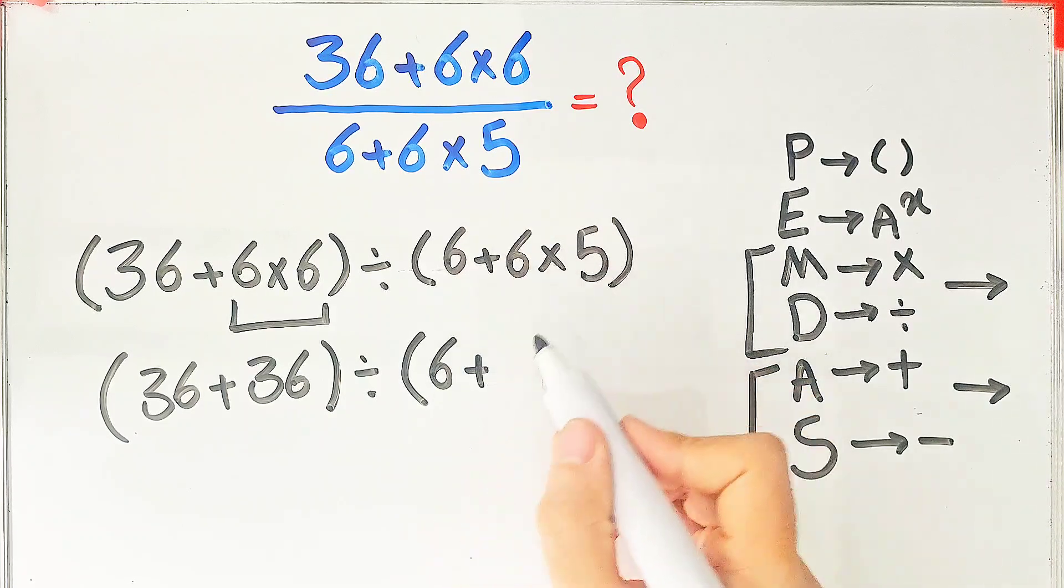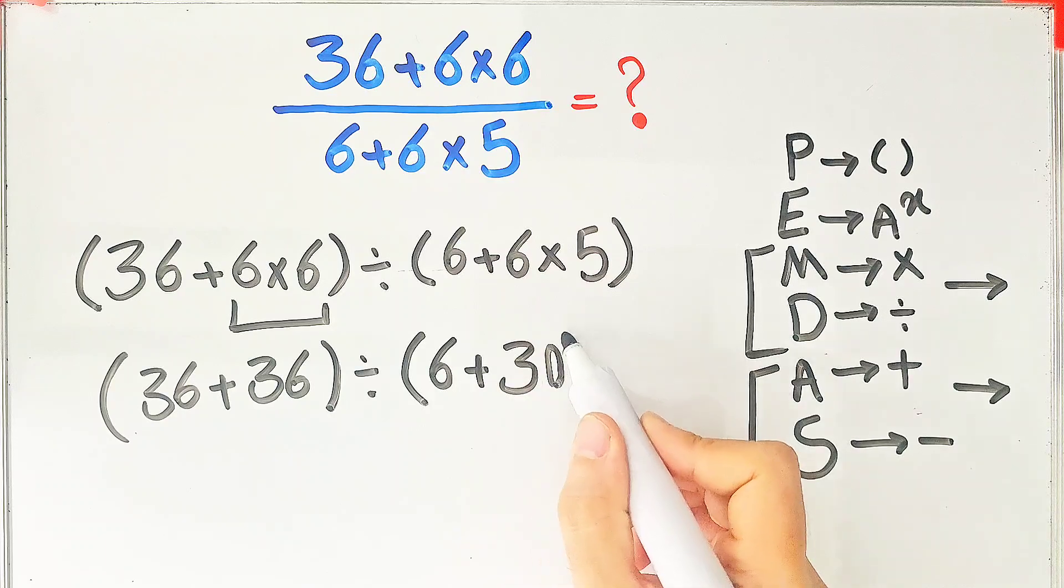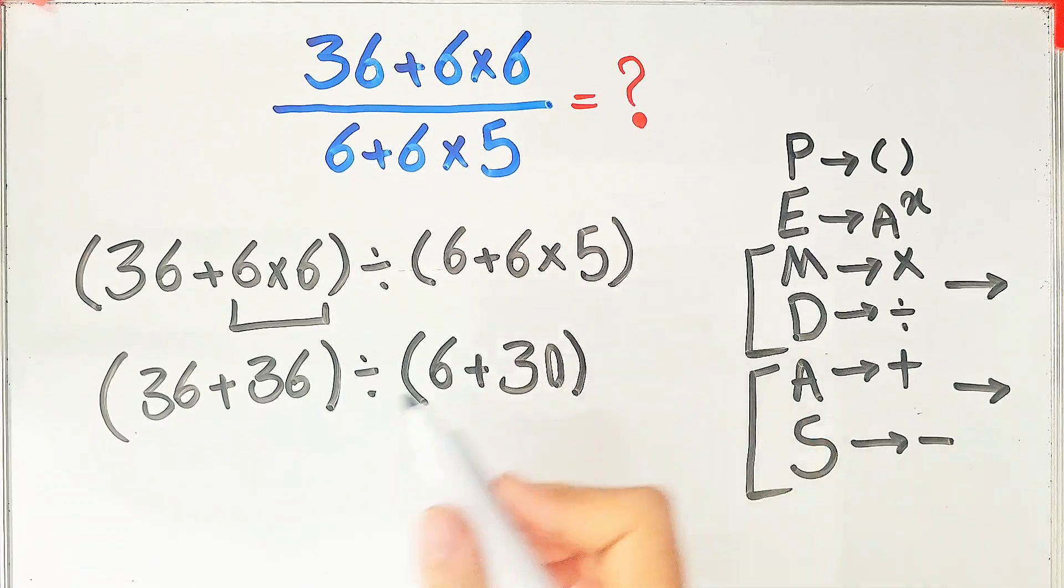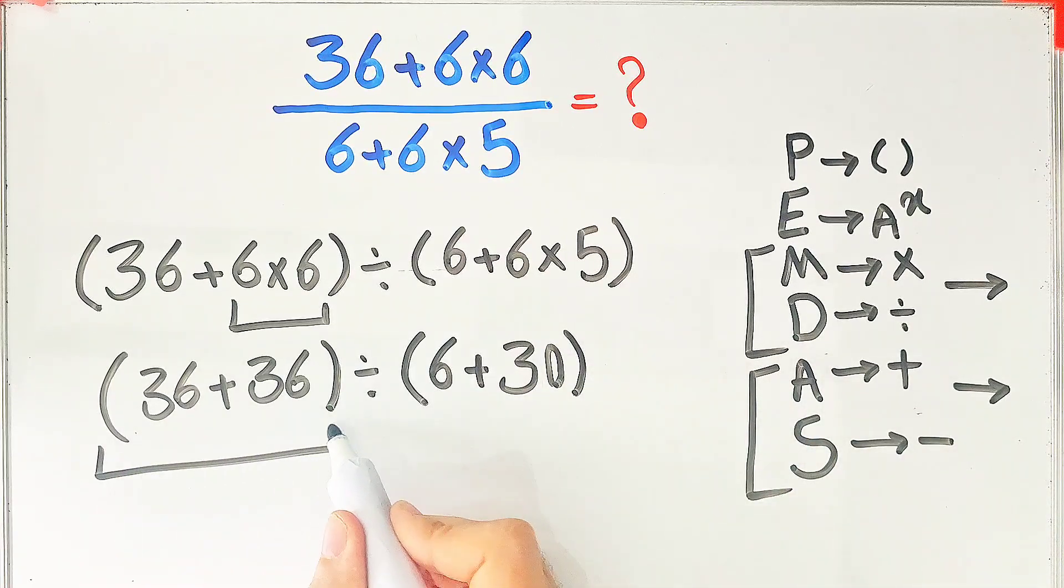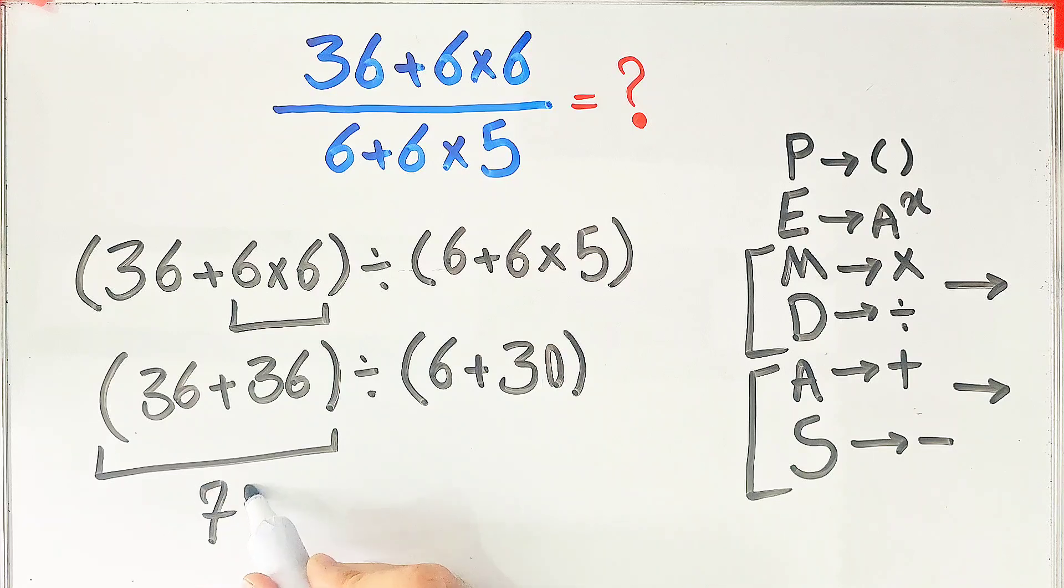In the first parentheses, we have 36 plus 36, which equals 72. And in the second parentheses, we have 6 plus 30, which equals 36. 72 divided by 36 equals 2.